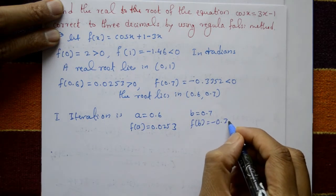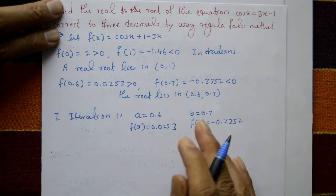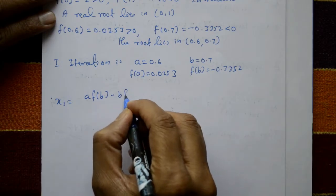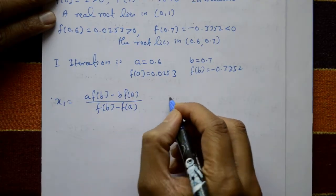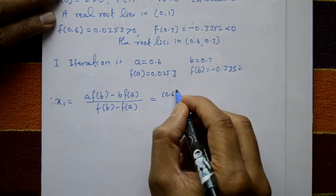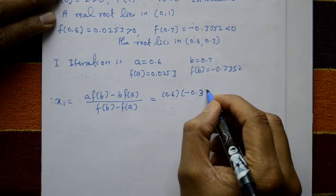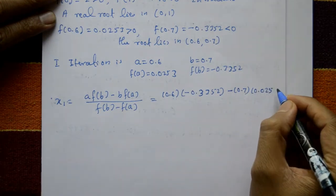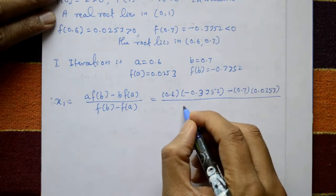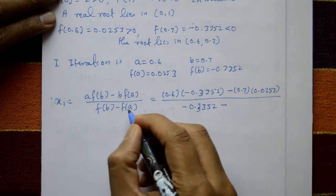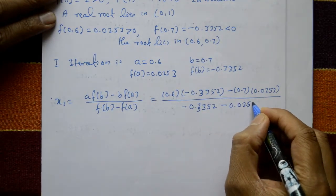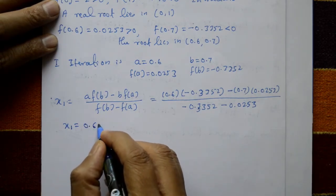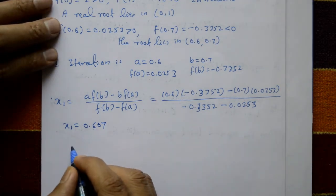Using the Regula Falsi formula: x1 = [a·f(b) - b·f(a)] / [f(b) - f(a)]. Substituting: a = 0.6, f(b) = -0.3352, b = 0.7, f(a) = 0.0253. Simplifying, we get x1 = 0.607.